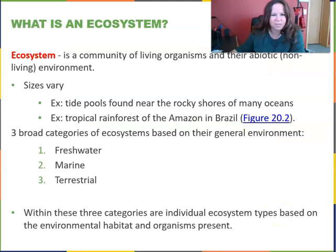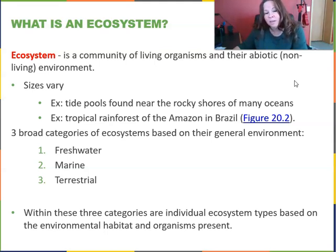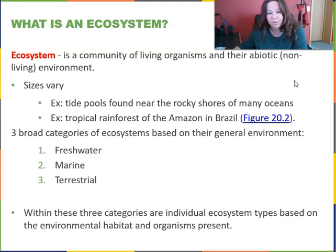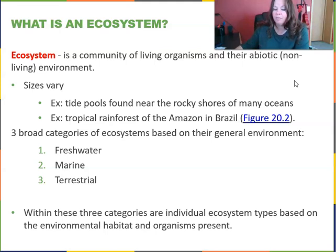An ecosystem is a community of living organisms and their abiotic or non-living environment, and how they all interact together. The sizes of ecosystems vary — from tide pools found near rocky ocean shores to the tropical rainforest of the Amazon in Brazil. Three broad categories of ecosystems include freshwater, marine, and terrestrial ecosystems. Terrestrial means on the land. Within these three categories are individual ecosystem types based on their environmental habitat and the organisms present.